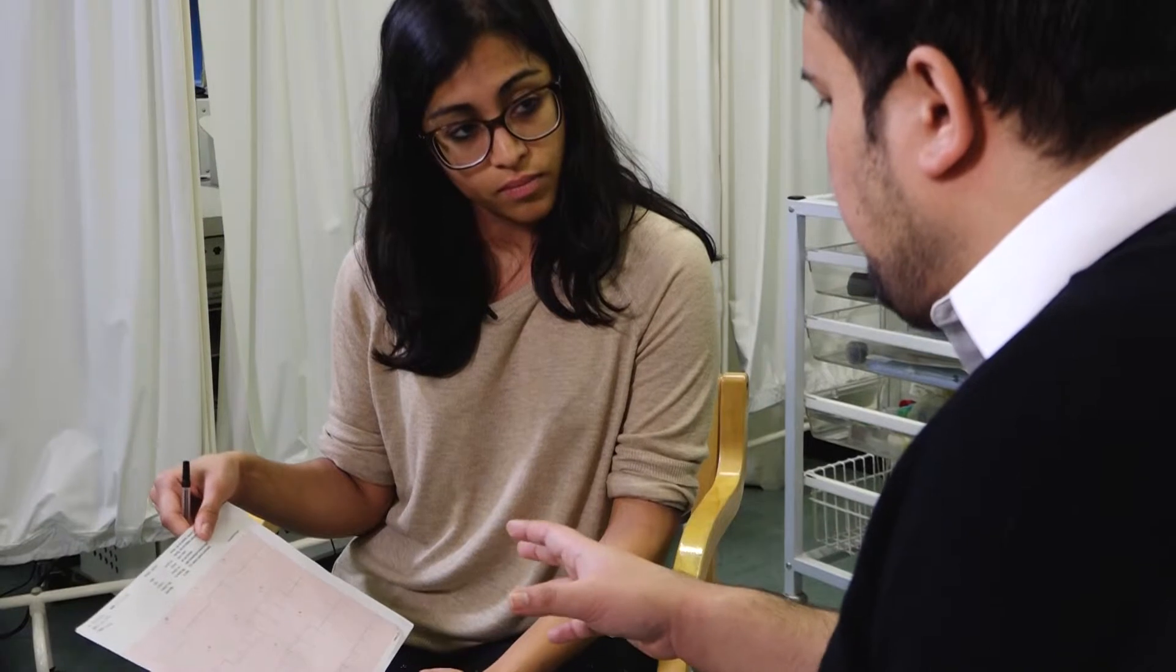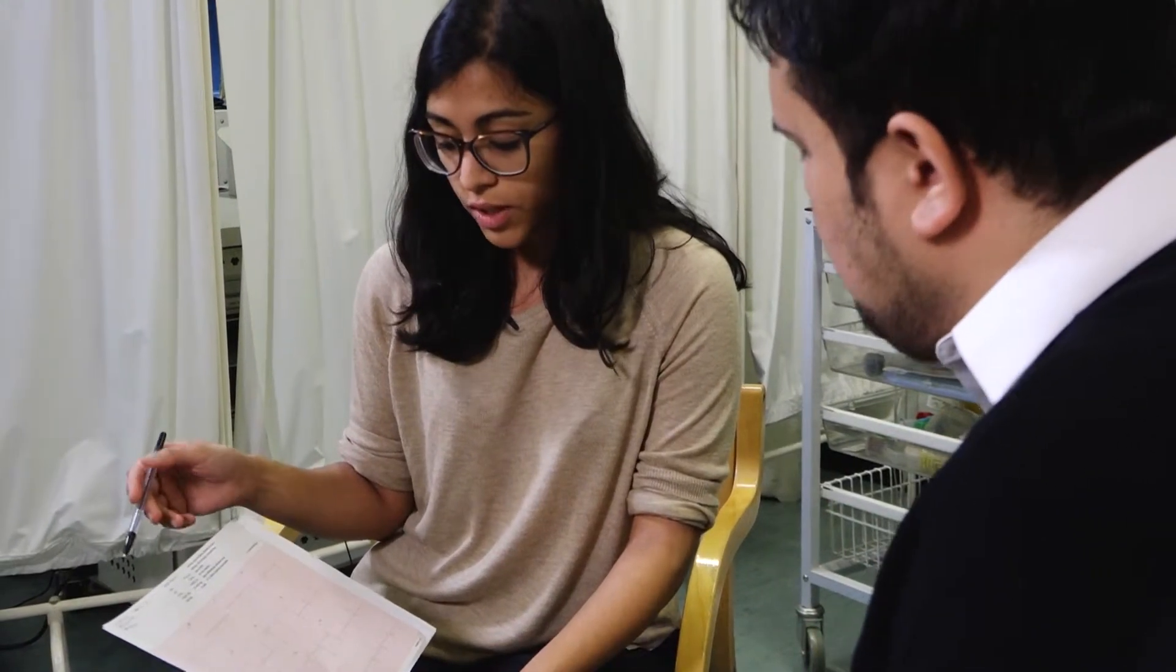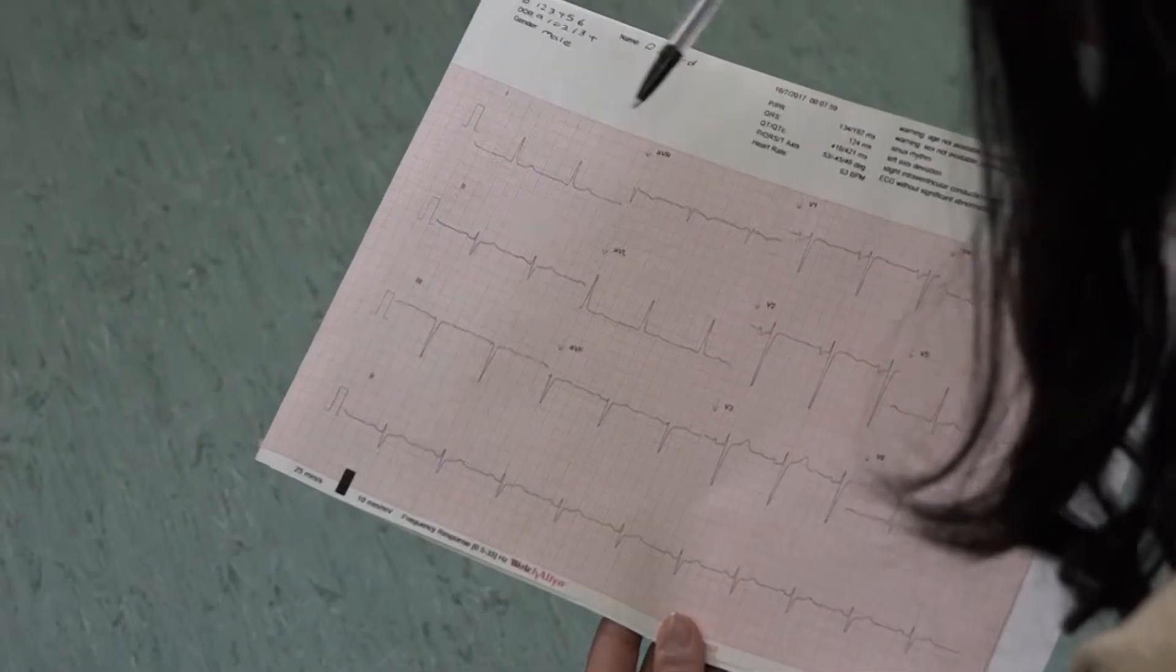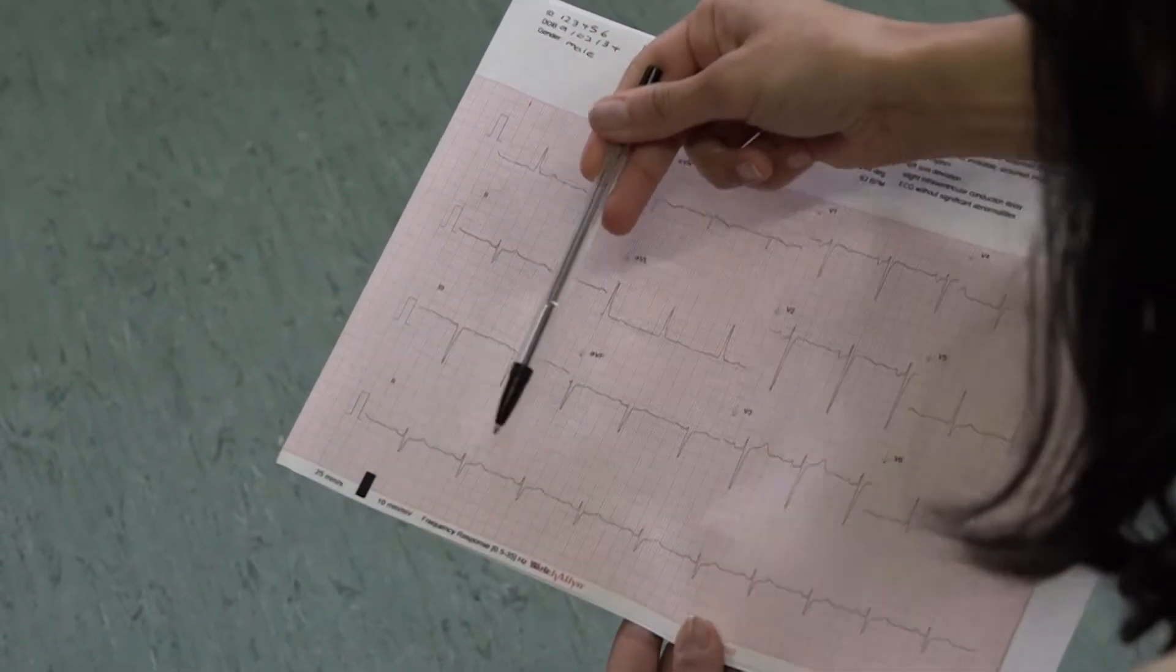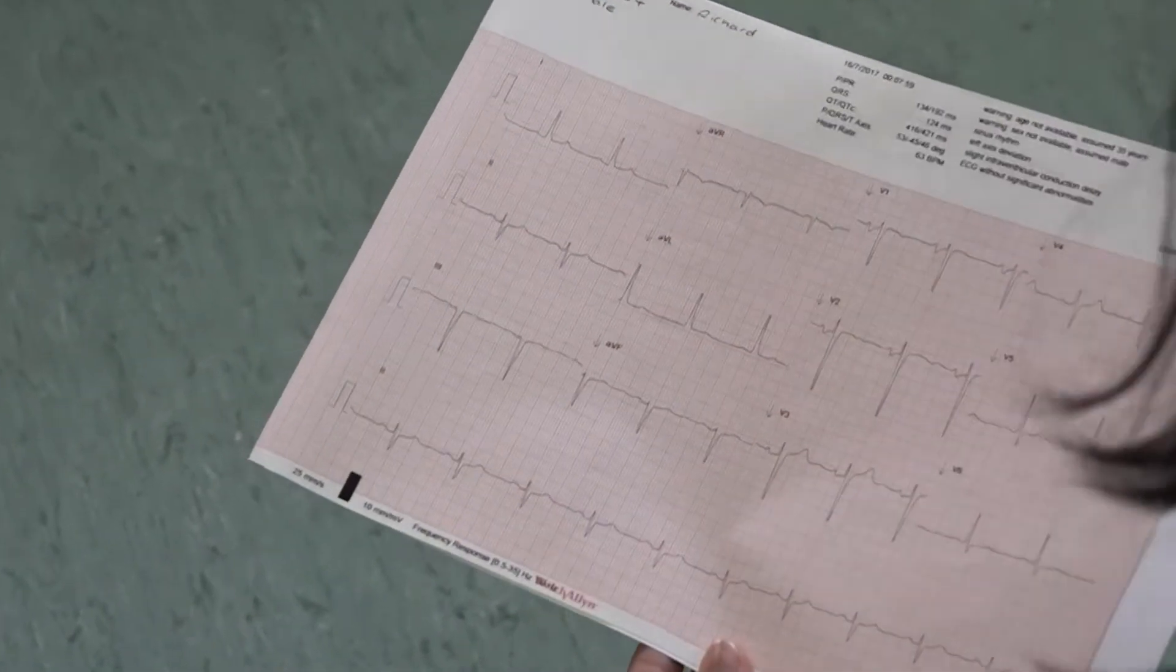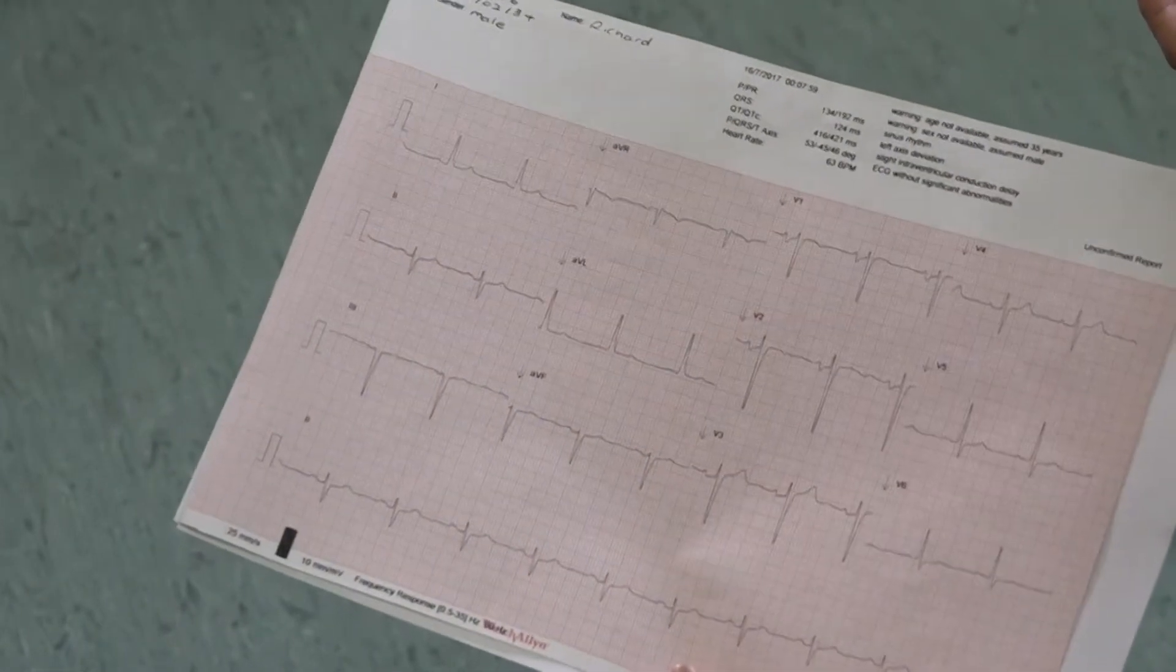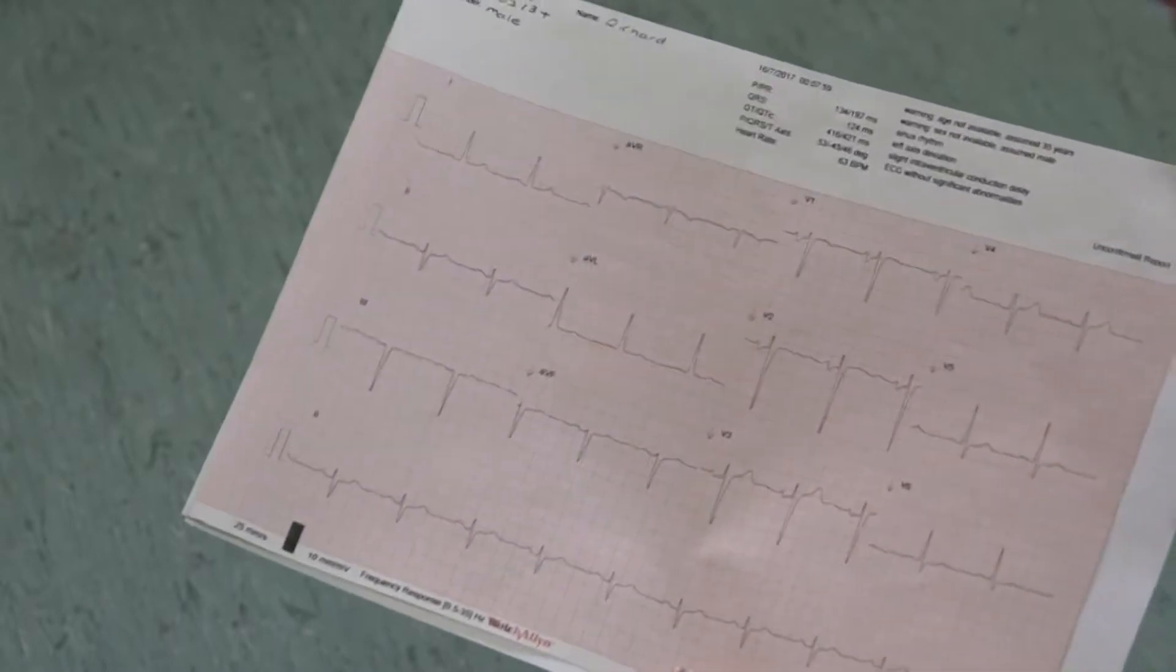Could you try and work through the components and the complexes for the ECG for me? Sure. The first wave in our ECG will be the P wave. You want to make sure that there's a P wave preceding each QRS complex. You can look at that with the rhythm strip. If there aren't P waves preceding each QRS complex, that suggests there is atrial fibrillation.